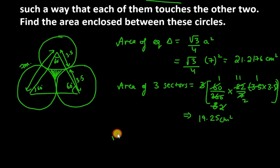Now to find the area enclosed between these circles, we calculate: area of equilateral triangle minus area of three sectors.